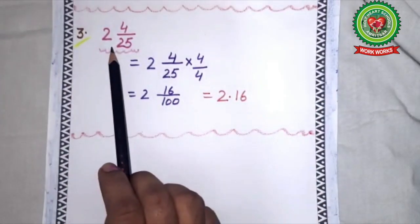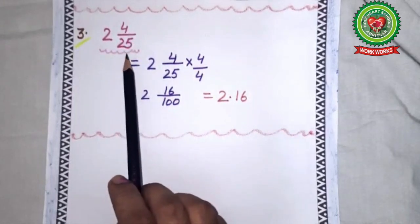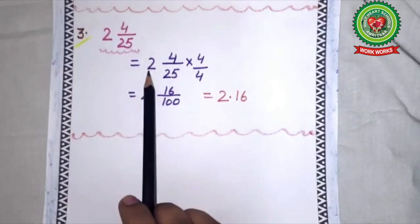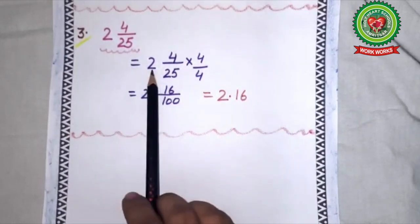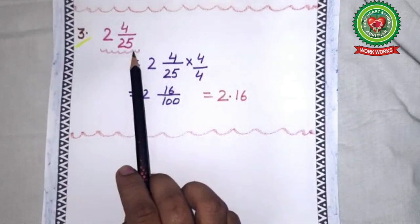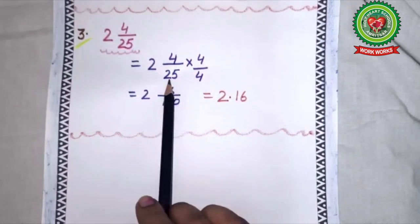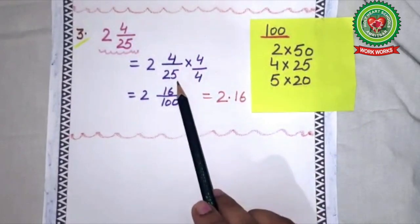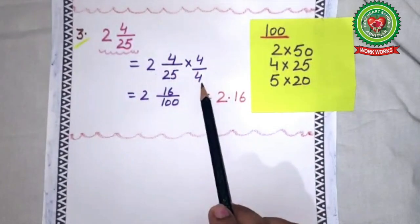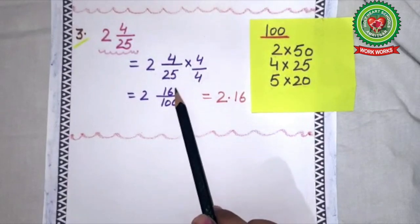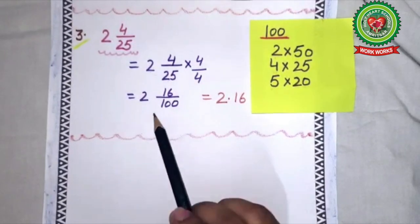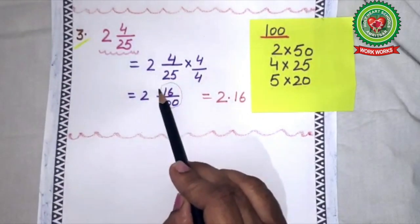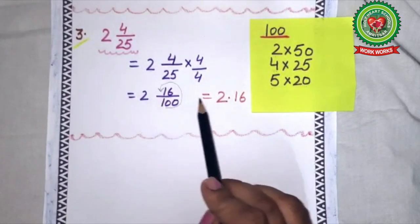The third sum is 2 whole number 4 upon 25. Again the term is in mixed fraction; we will not change it into improper. Whole number remains the same: 2. 4/25 × 4/4, since denominator is 25 we multiply by 4. 4 × 4 = 16, 25 × 4 = 100. Two zeros, shift the point by 2 digits. Answer is 2.16.